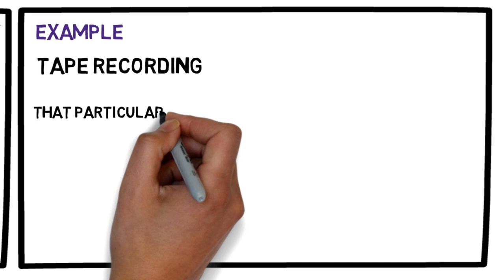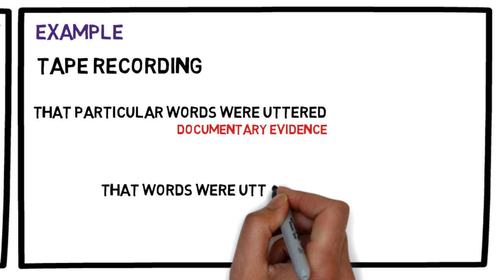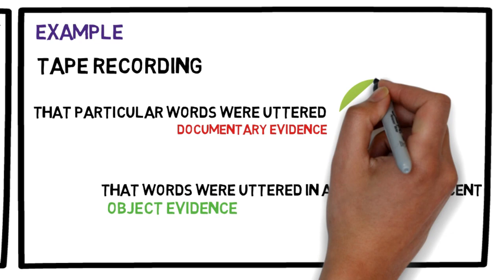For example, if a tape recording is played to show that particular words were uttered, it will constitute documentary evidence. However, if it is played to simply show that words were uttered in a particular accent, then it is object evidence.